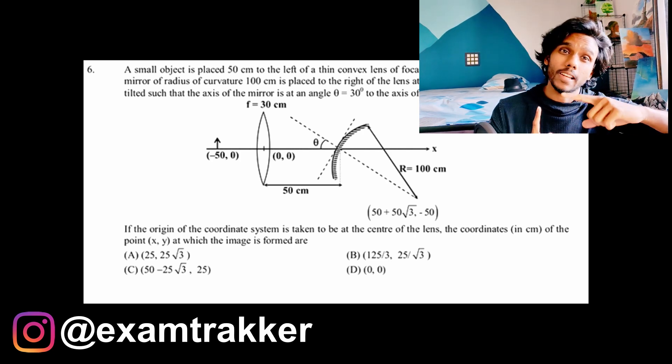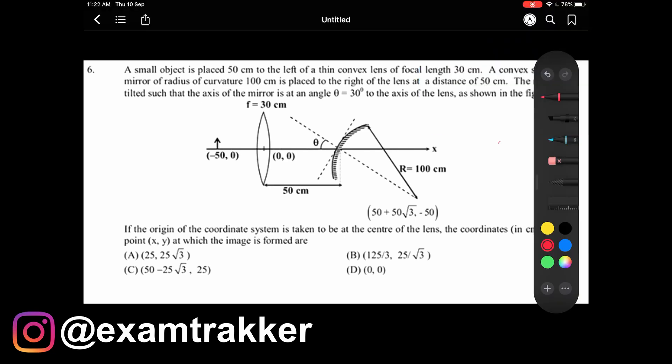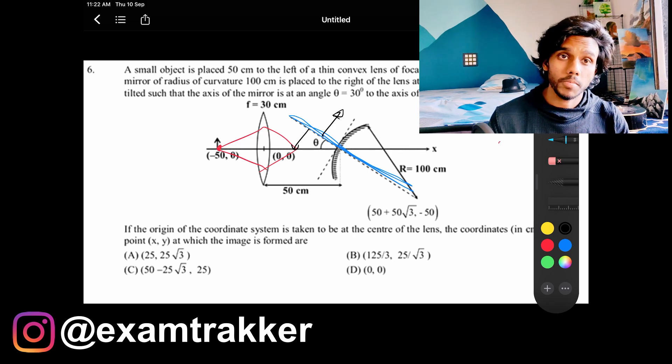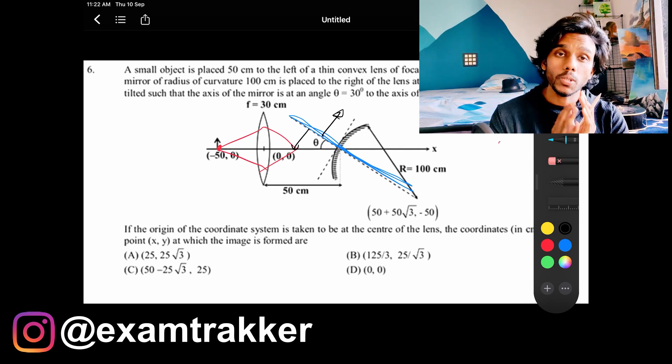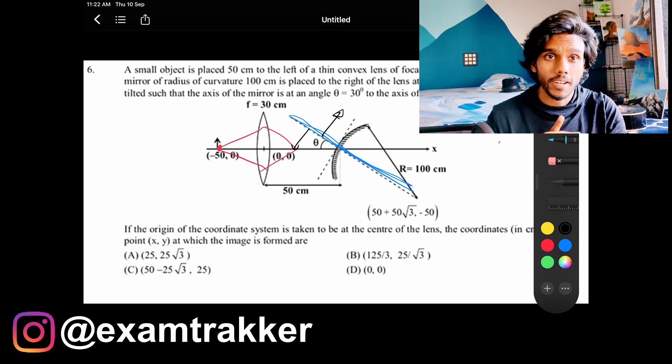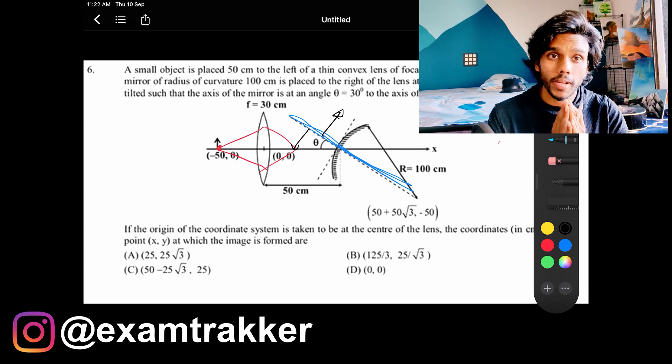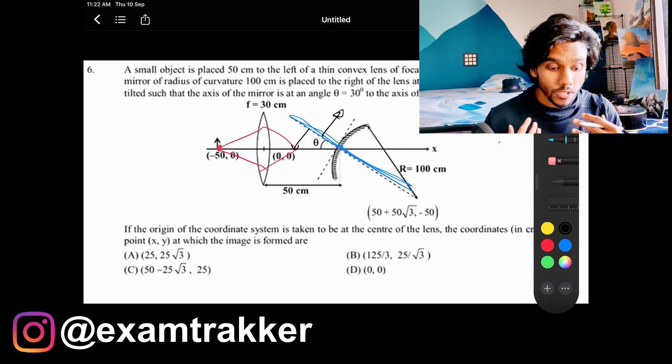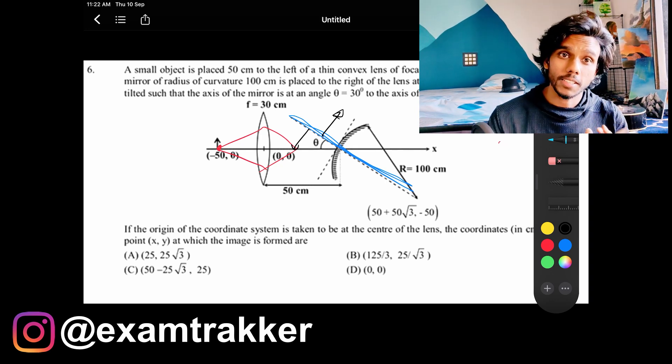If you approach this problem in your conventional method—taking this as an object, finding the image through the lens, and this was an object for the mirror whose principal axis is like this—so this will be the object and you have to find the image. That involves a lot of mathematics and takes a lot of time. All you have is one hour for the physics exam. In that one hour, you have to spend your time wisely to clear the exam.